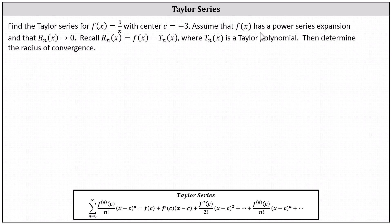From the Taylor series for f(x) equals four divided by x with the center at x equals negative three, which we label as c equals negative three, assume that the function f(x) has a power series expansion and that the remainder R sub n of x approaches zero. Then determine the radius of convergence. Again, we have the Taylor series defined below.